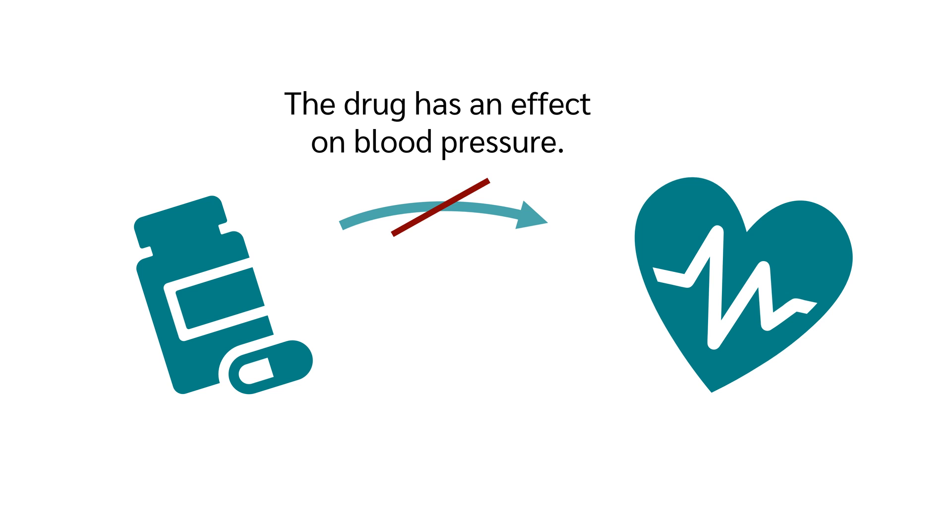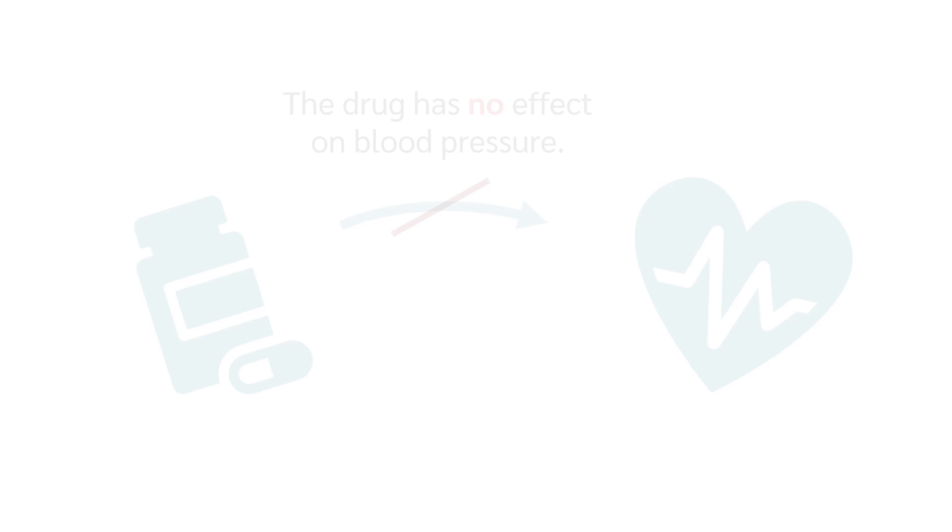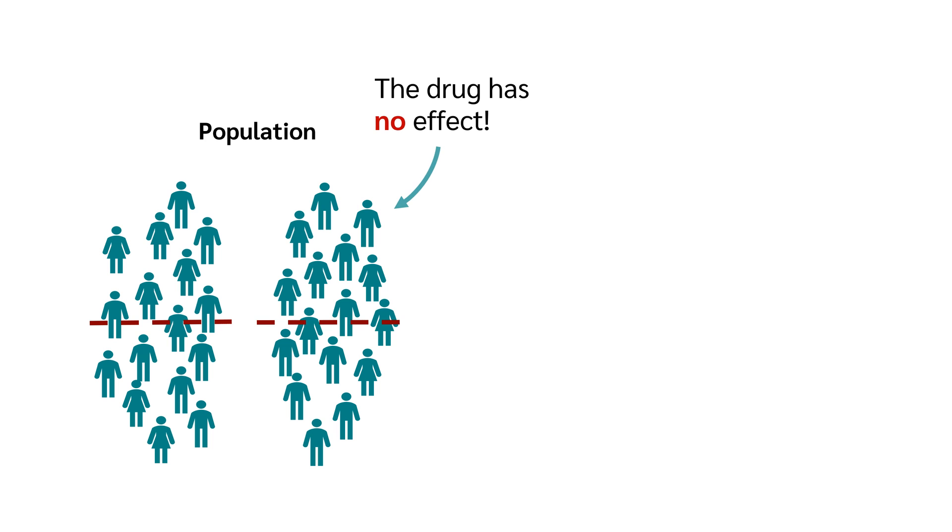But we cannot test this hypothesis directly with a classical hypothesis test, so we test the opposite hypothesis, that the drug has no effect on blood pressure. But what does that mean? First, we assume that the drug has no effect in a population. We therefore assume that in general, people who take the drug and people who don't take the drug have the same blood pressure on average.